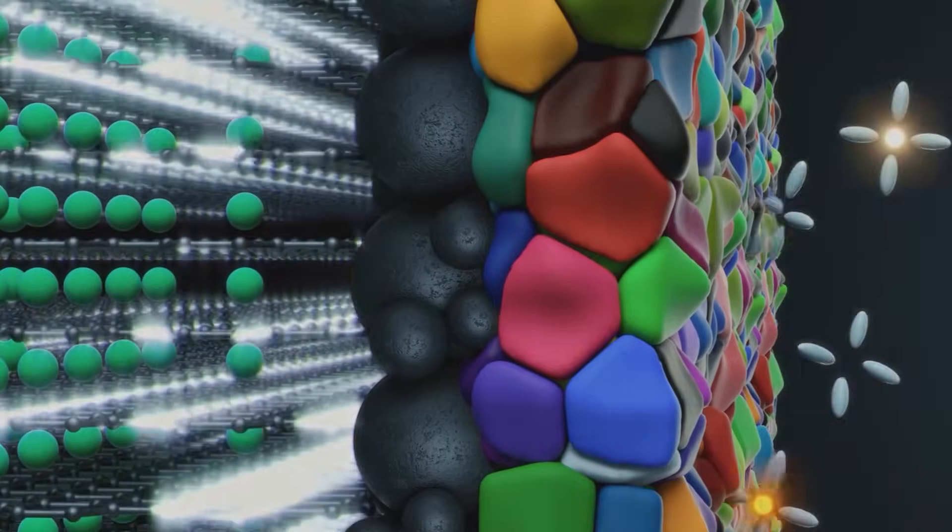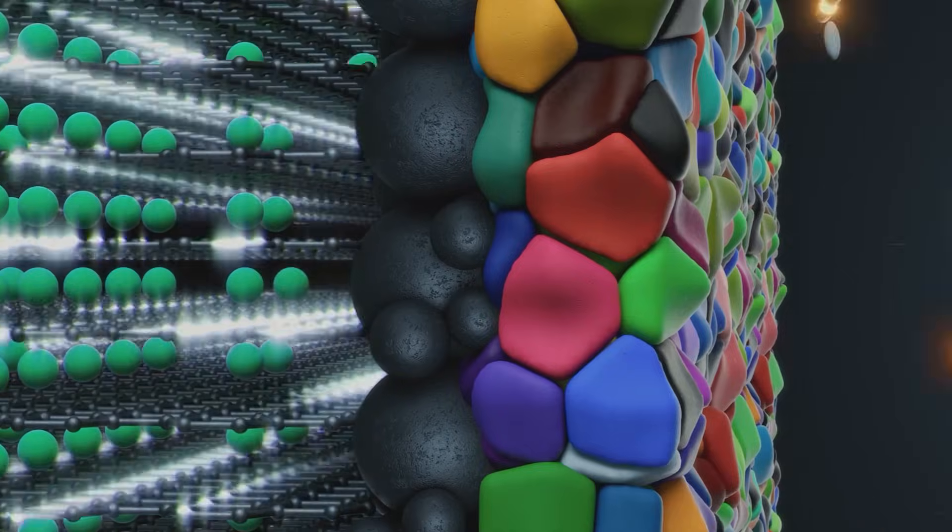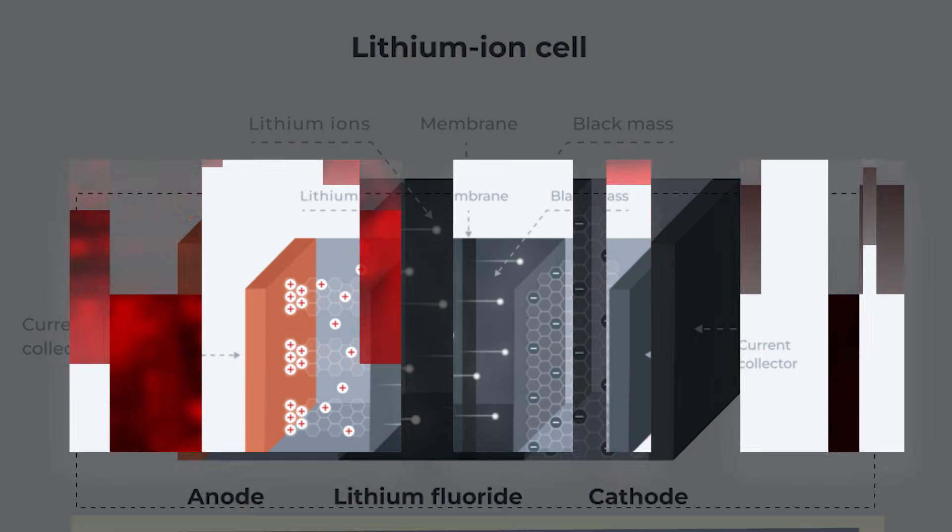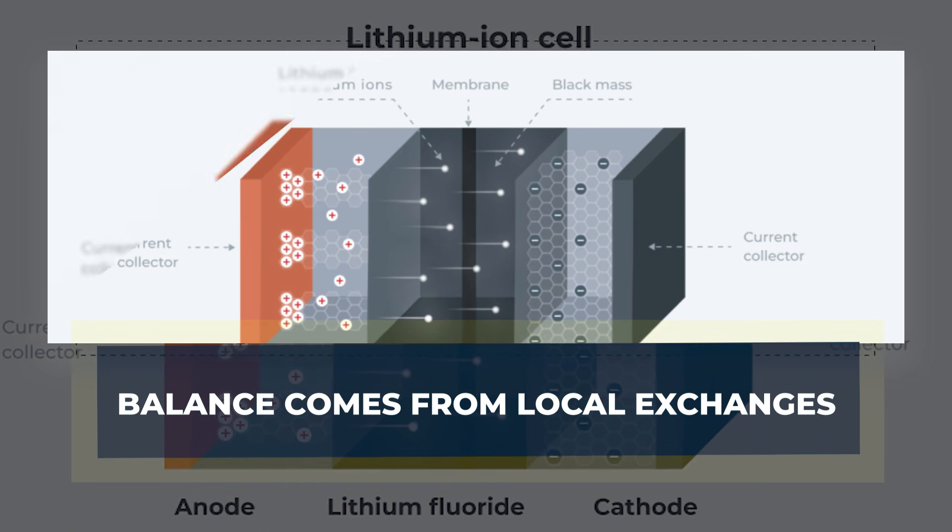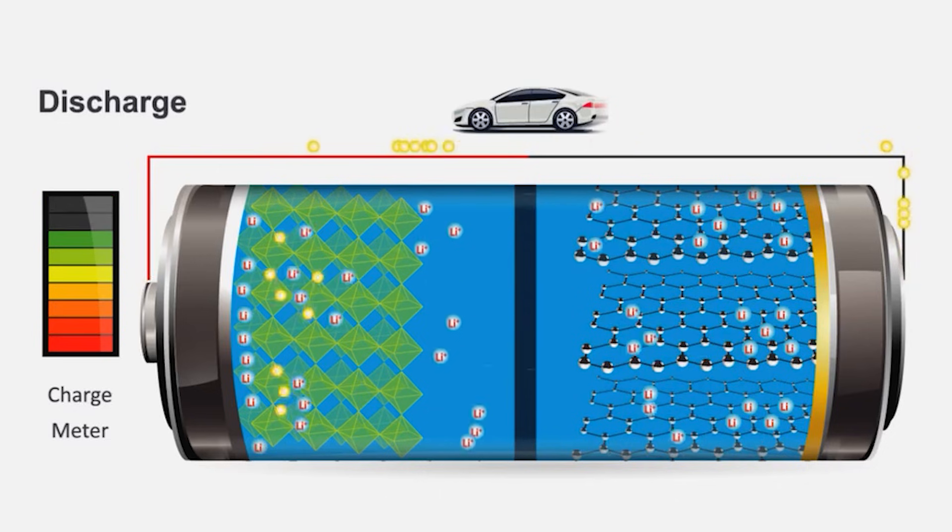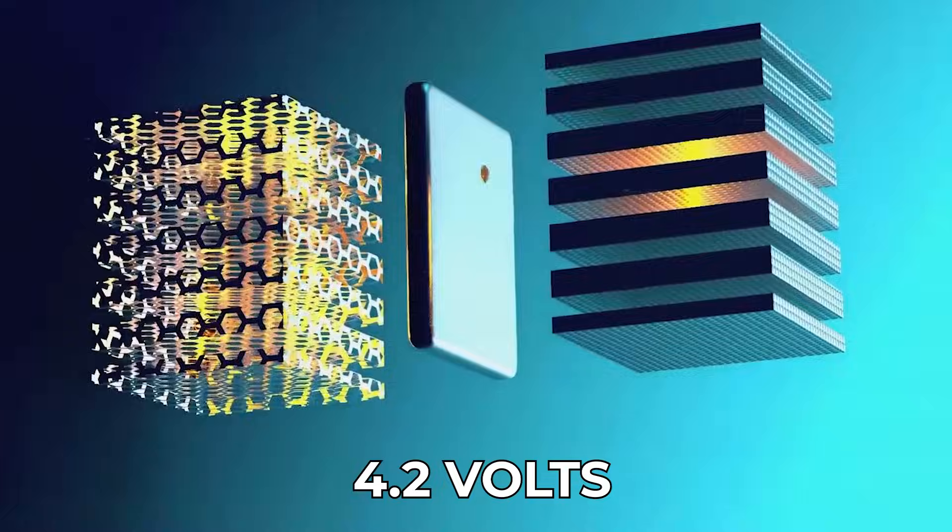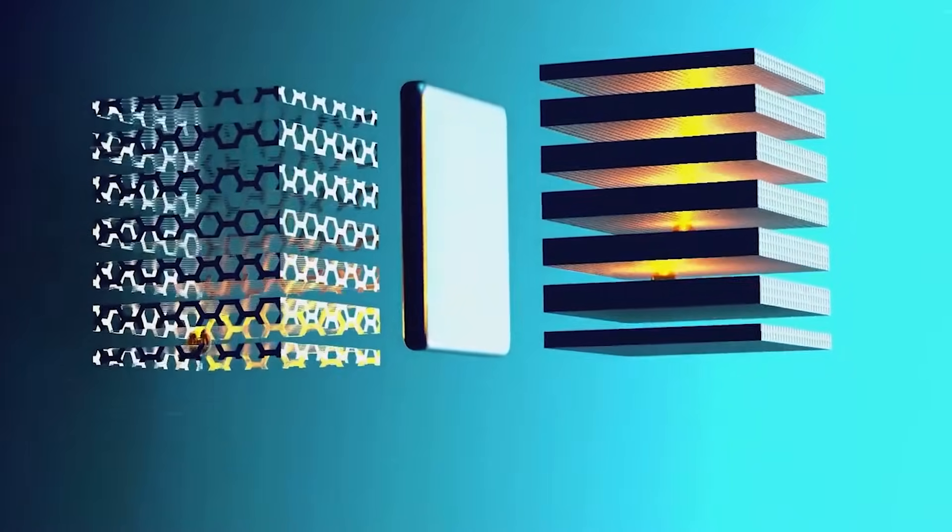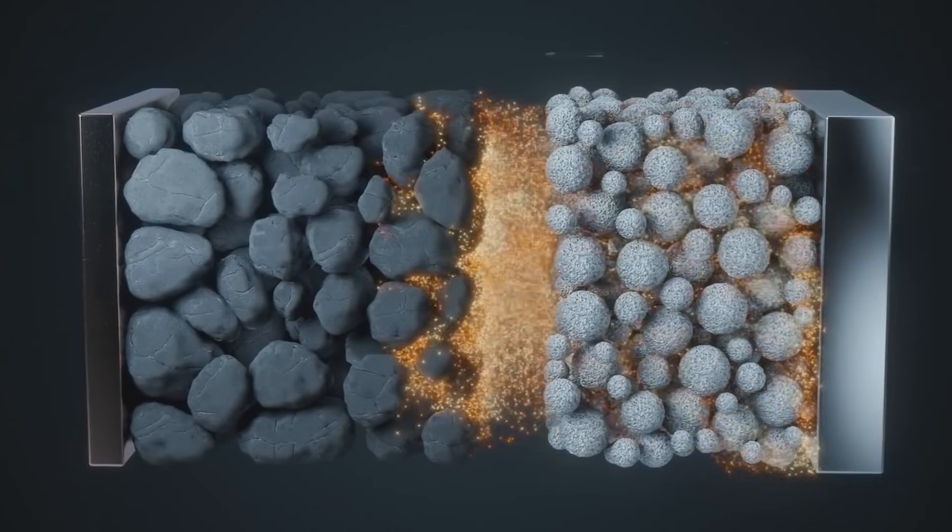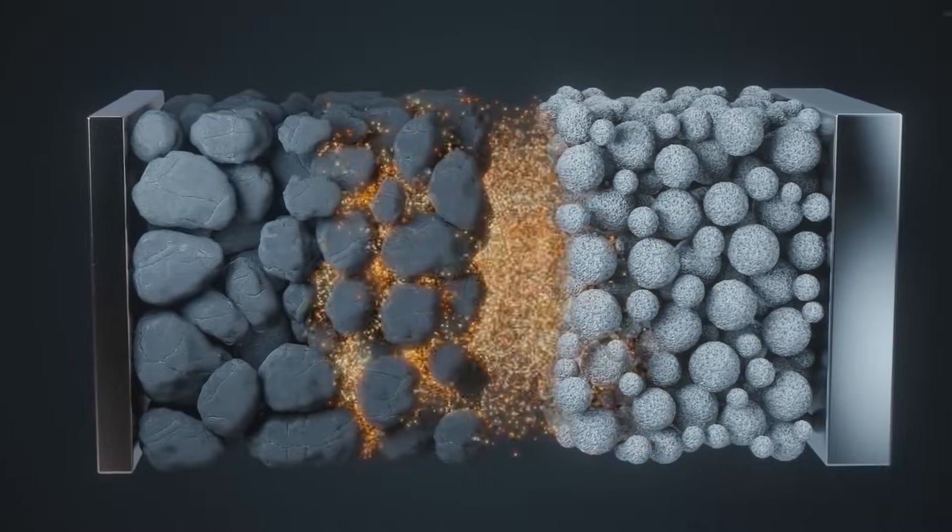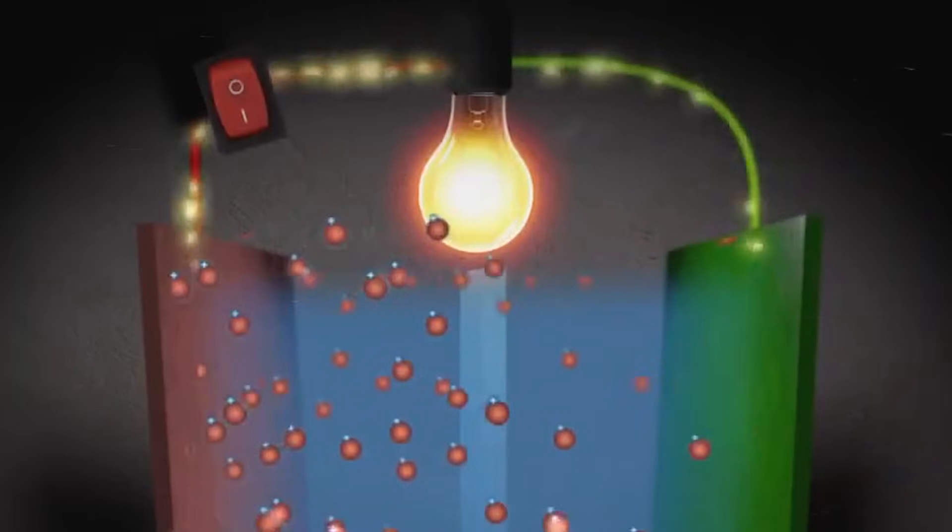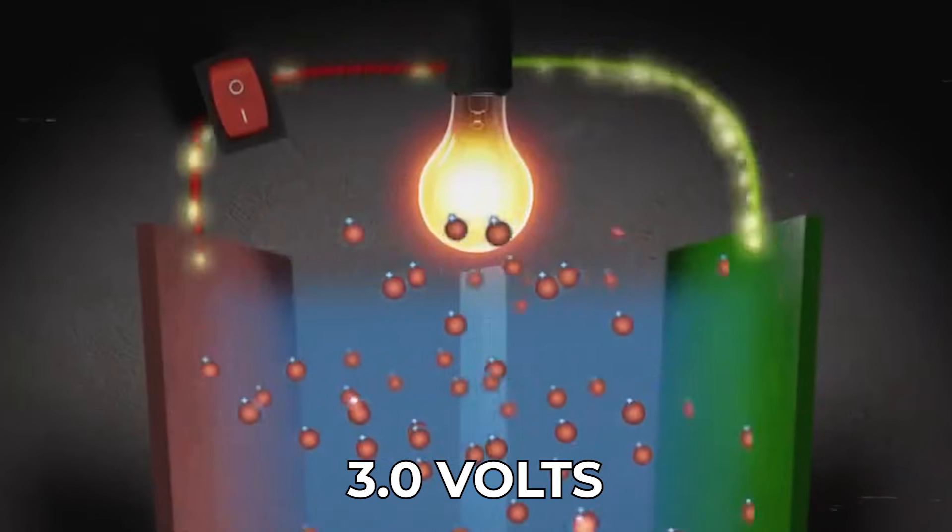The electrons and ions reaching the cathode are often different from the pair that left the anode. Balance comes from local exchanges. At the start of discharge, the push is strong, often near 4.2 volts. As lithium leaves the anode and returns to the cathode, that imbalance shrinks, so voltage falls. Many cells treat about 3.0 volts as a practical end point.